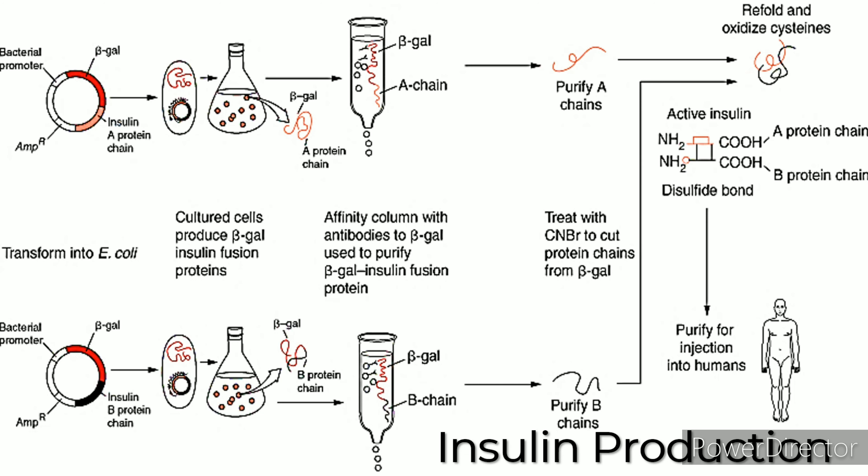This recombinant microorganism can produce the protein encoded by the human gene. Scientists built the human insulin gene in the laboratory. A flowchart shows how insulin is produced using transformed E. coli cells.